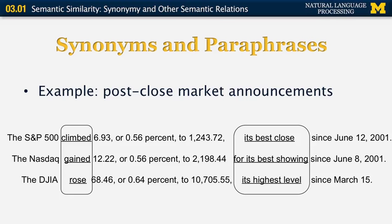On the right-hand side, we also looked at paraphrases, which are 'its best clause,' 'its best showing,' and 'its highest level.' The difference between the left column and the right column is that in the left one we have synonyms, and in the second case we have paraphrases.